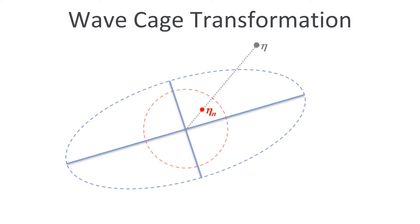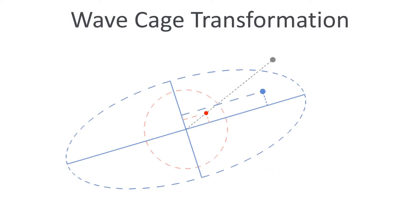In a second step, we project eta n onto the two ellipse axes and multiply by the major and minor cage radii, giving us the constraint point eta C, here shown in blue. Note how the circular motion of the input point gets smoothly mapped inside the cage.